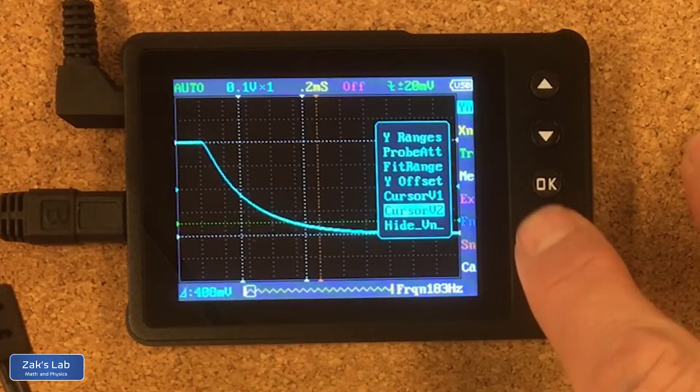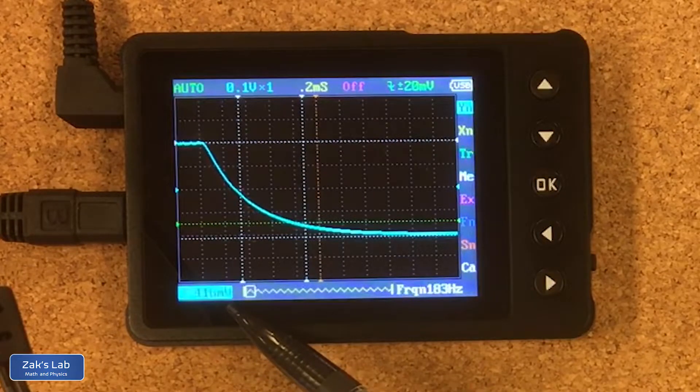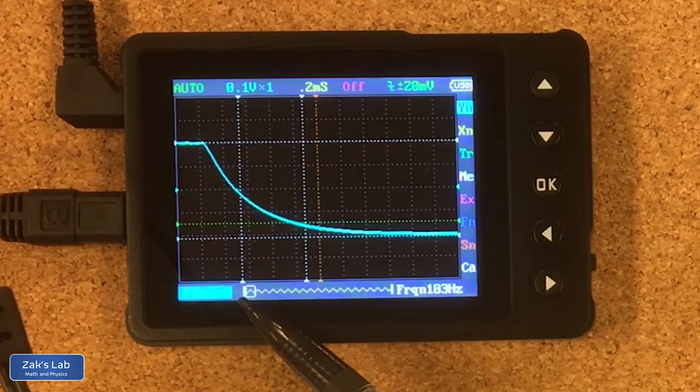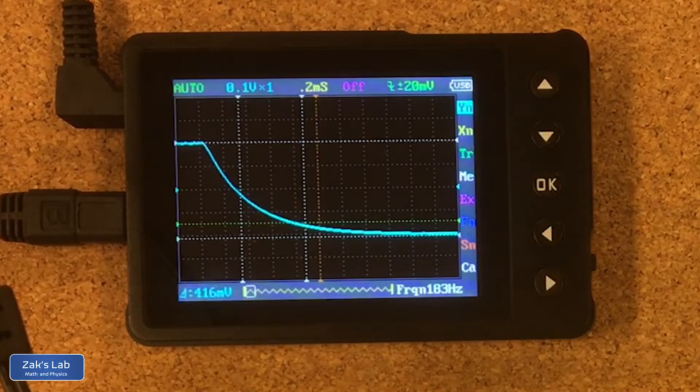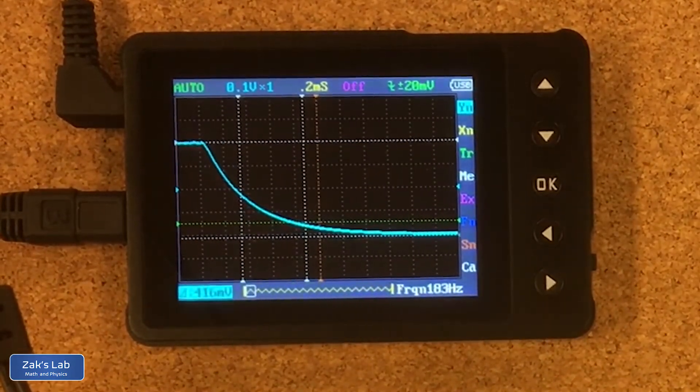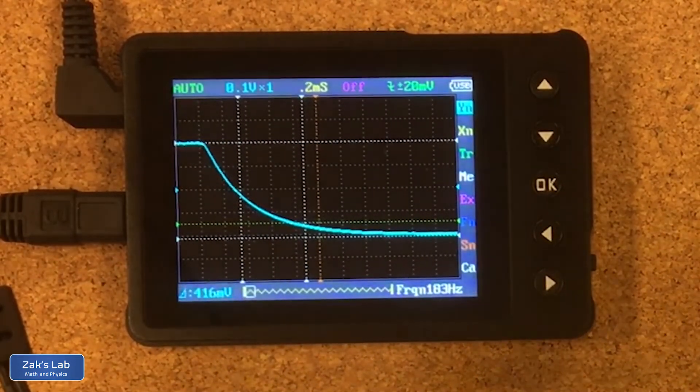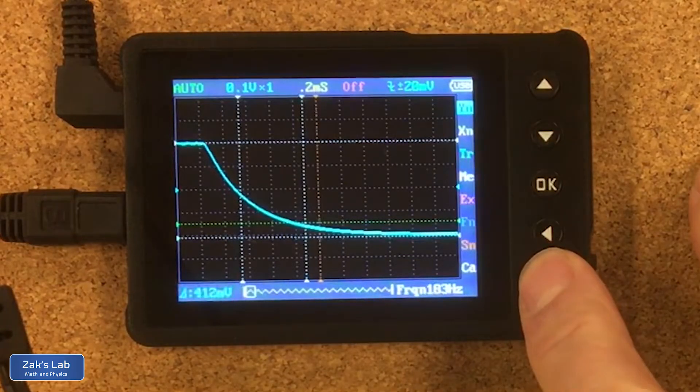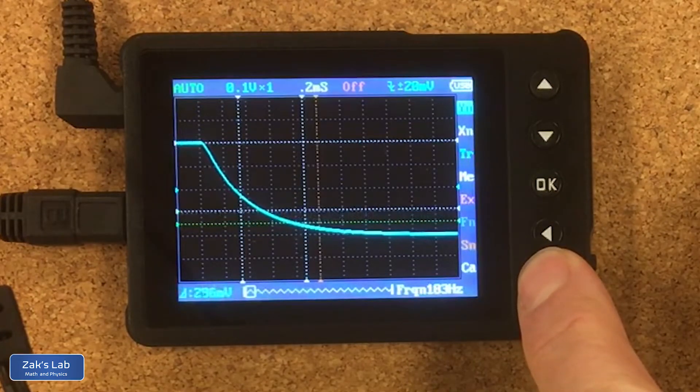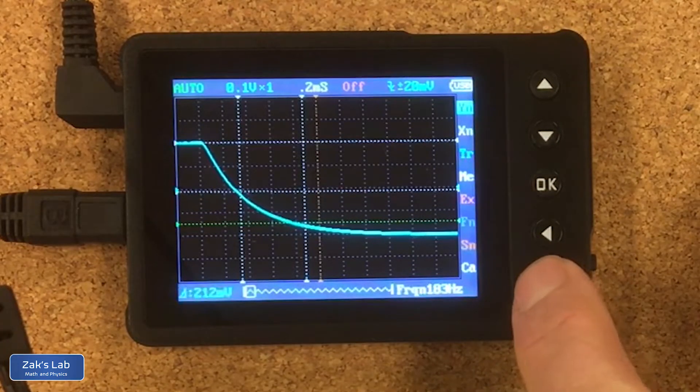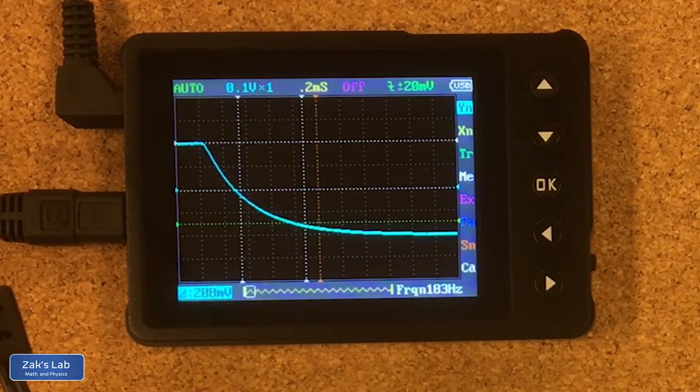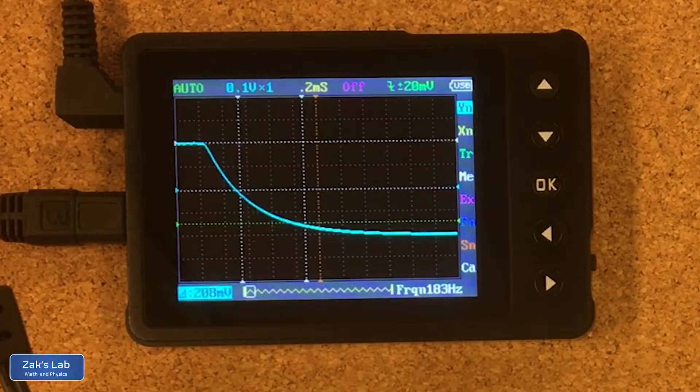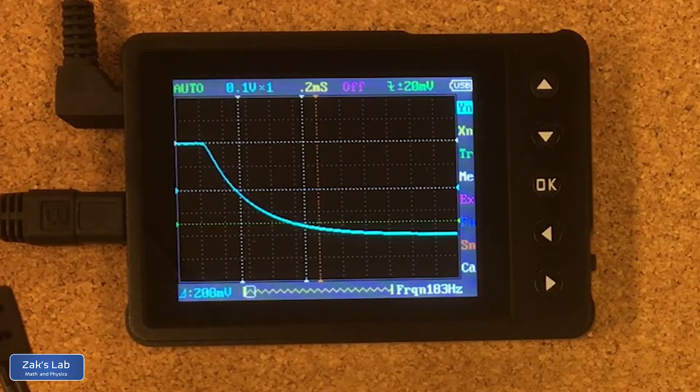Then I take cursor number two and move it all the way down to the lowest spot on the signal. In the lower left corner on this oscilloscope it tells me the difference between these two cursors and that's 416 millivolts. We're going to take half that value, that's 208 millivolts, and move our cursor up until we get to that point. So that's the point where the voltage has decayed by a factor of two. In other words, this is the moment where one half-life is occurring. The current has dropped to half its original value.